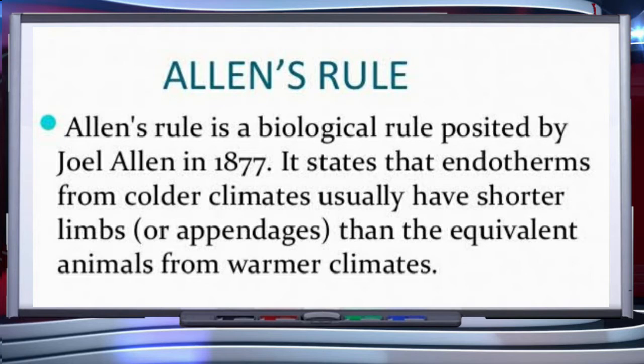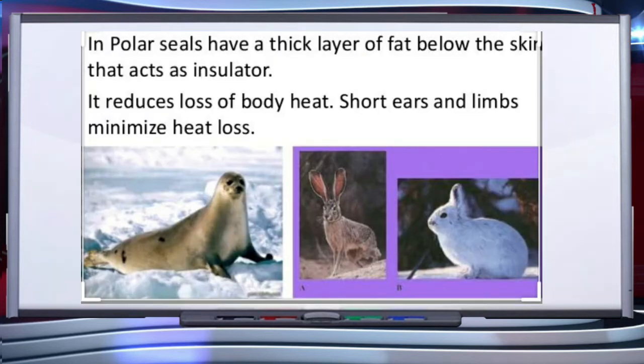Allen's Rule states that mammals from colder climates generally have shorter ears and limbs to minimize heat loss. In polar seas, aquatic mammals like seals have a thick layer of fat called blubber below their skin that acts as an insulator and reduces loss of body heat.